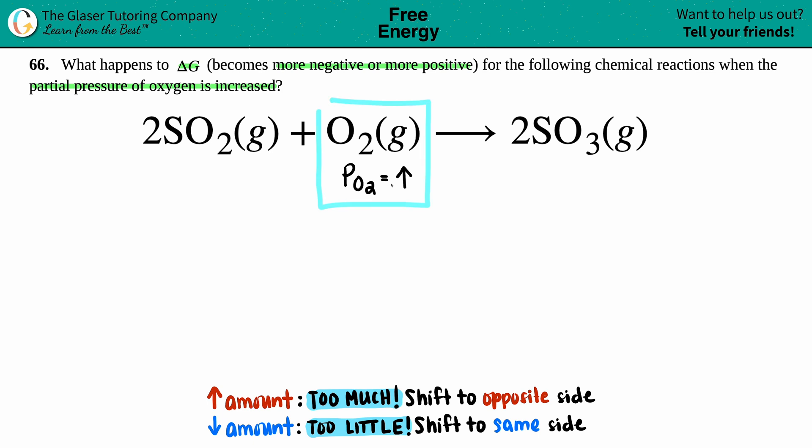Since the increase was on your reactant side, you're going to shift to the opposite side. Because my increase was on the reactants, I know that I can make more product, so my shift is going to be to the right. It makes sense—if you have more of this, you can make more product.